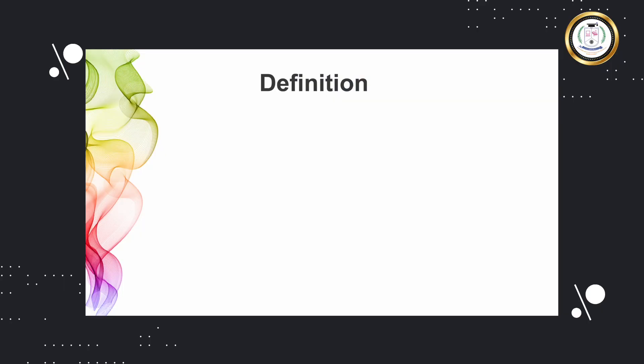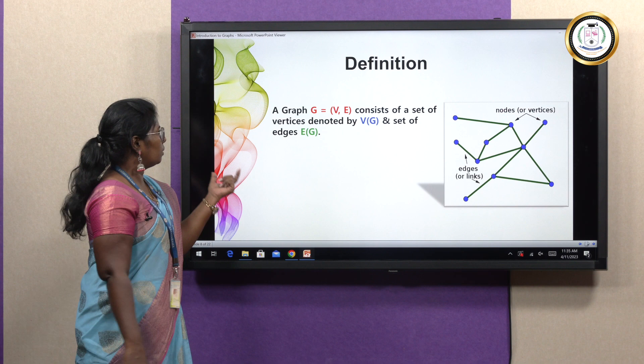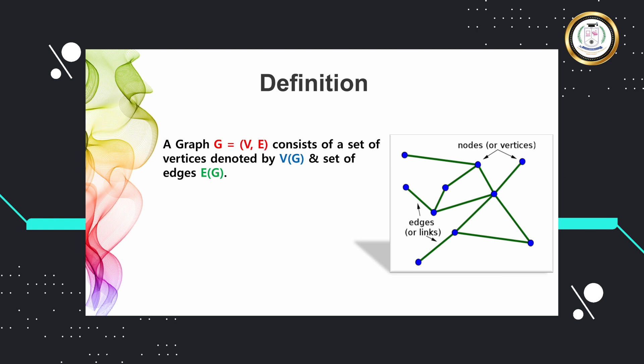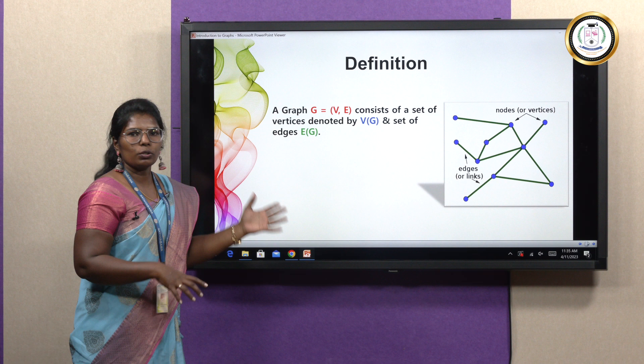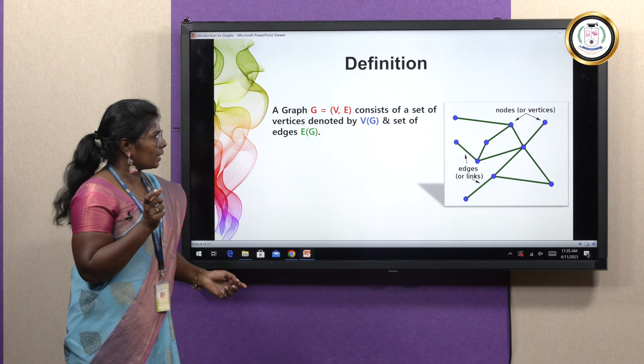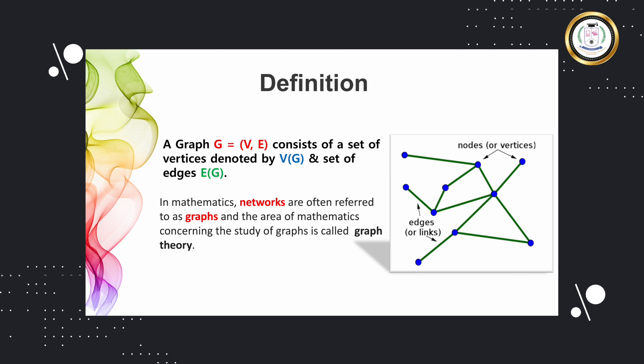Let's see how to represent a graph mathematically. G is a graph which is an ordered pair of sets V and E, where V denotes the vertex set — the blue points — and E, which connects the vertices or nodes, are called the edges, denoted E of G. In mathematics, networks are often referred to as graphs, and the area of mathematics which studies these graphs is called graph theory.